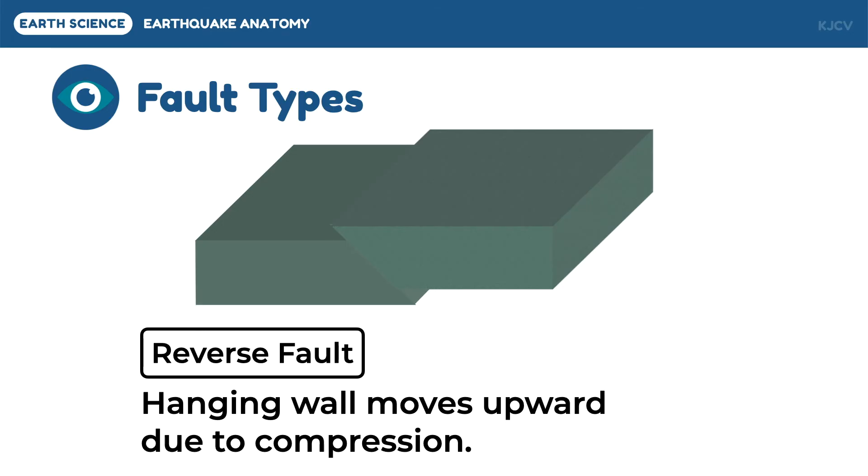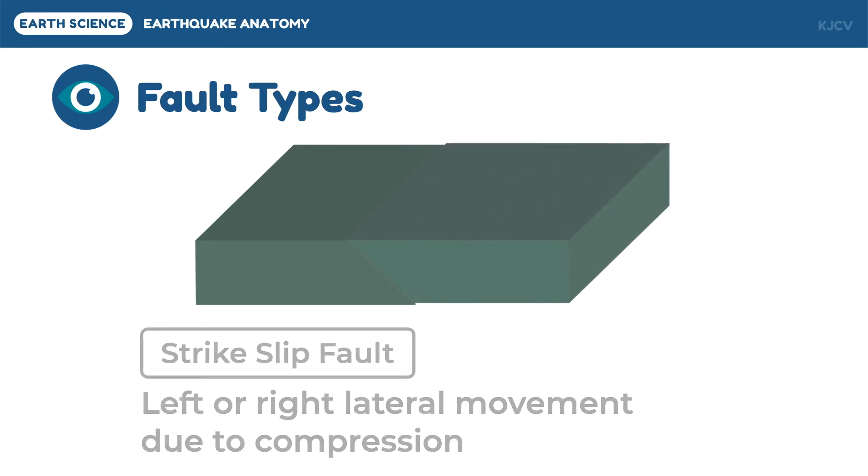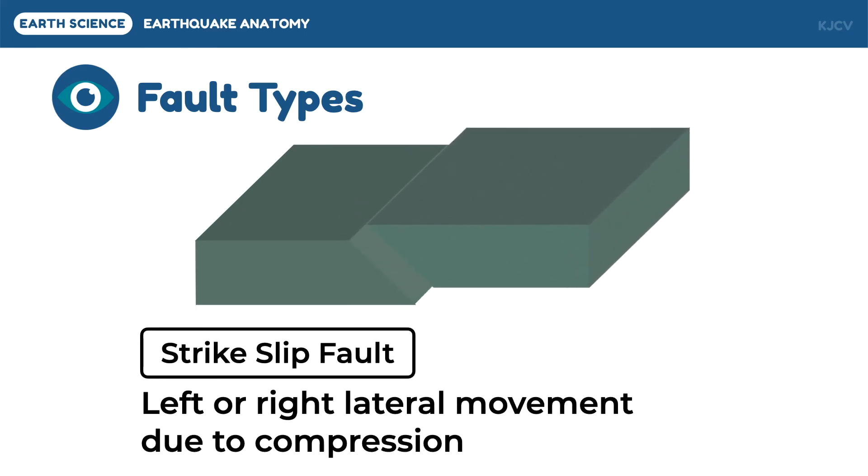However, there are instances in which the hanging wall will not move upward even when it is pushed. The hanging wall will move sideways as seen in strike-slip faults. In this fault type, the movement is either left or right lateral. Take note that it is the hanging wall and not the foot wall which moves in fault movements.